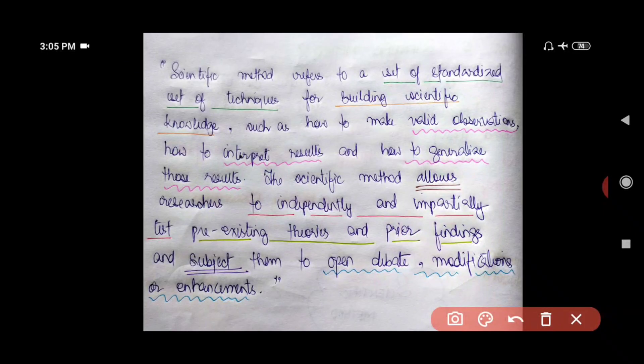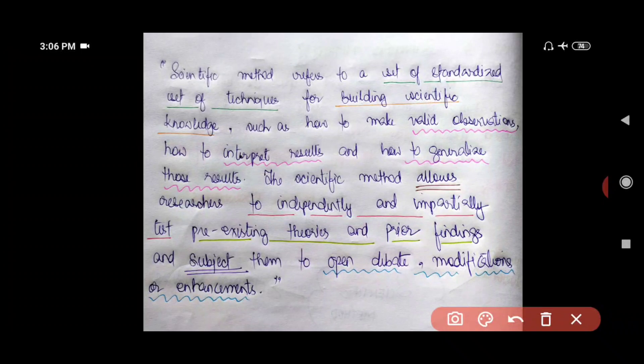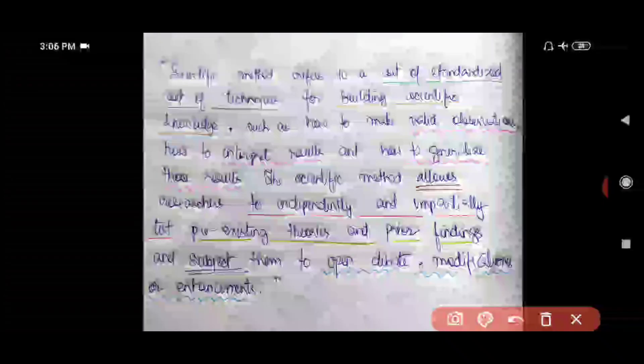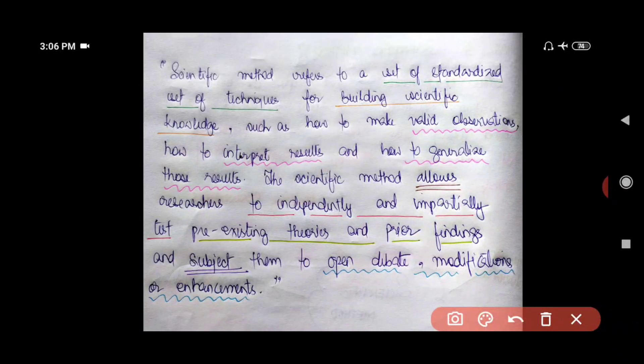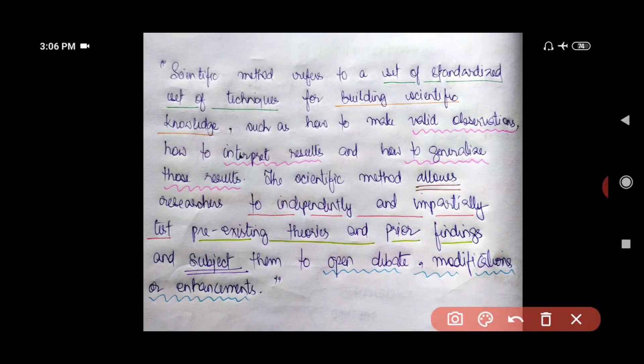So here is a more technical definition of what scientific method is. Scientific method refers to a set of standardized techniques. So it should be standardized. They are universally accepted and are followed everywhere for building scientific knowledge. Your aim is to do what?